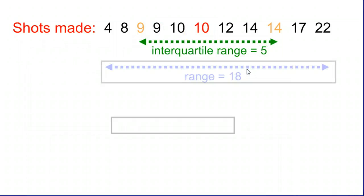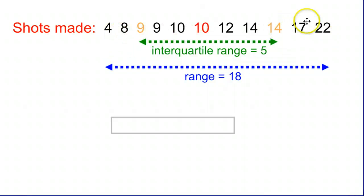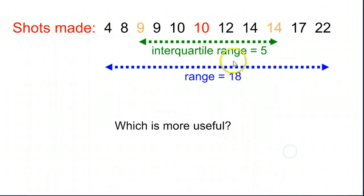Now there is the range. That's where you start from the highest all the way down to the lowest. 22 minus 4 in this case is going to be 18. Which of these is more useful? Well,